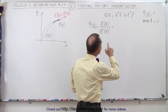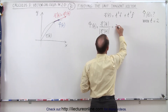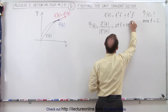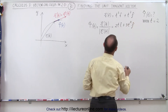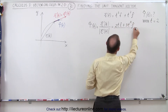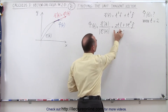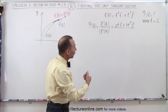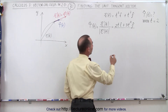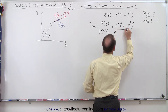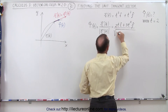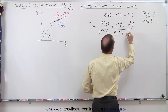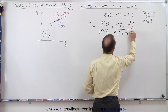So finding the derivative is relatively straightforward. We get 2t in the i direction plus 3t squared in the j direction. Now we're going to have to divide that by the magnitude. The magnitude is found by taking the square root of the sum of the squares of the individual components: the square root of 2t squared, which is 4t squared, plus 3t squared squared, which is 9t to the fourth power.